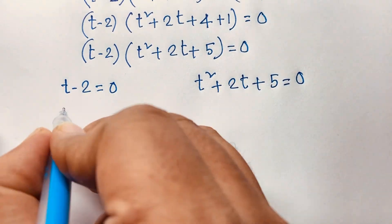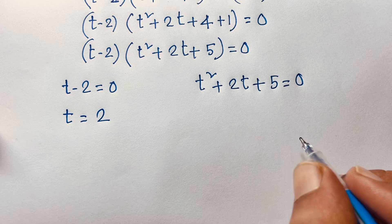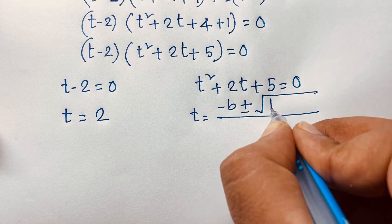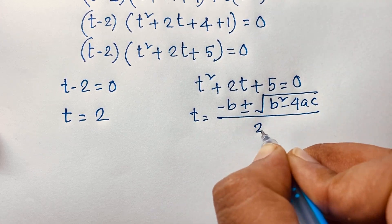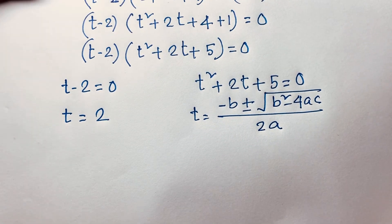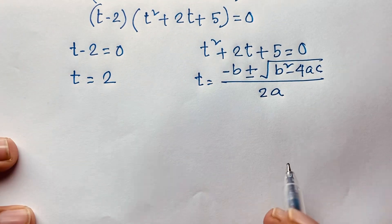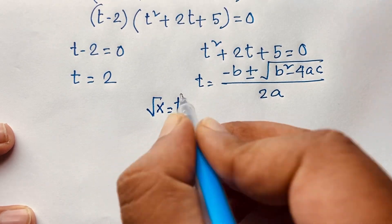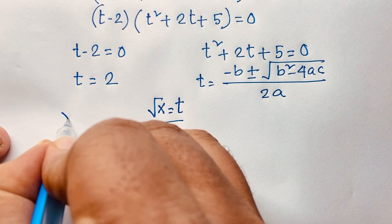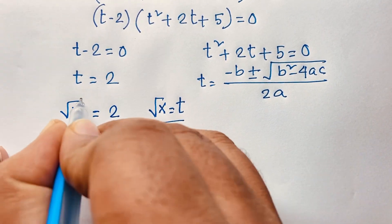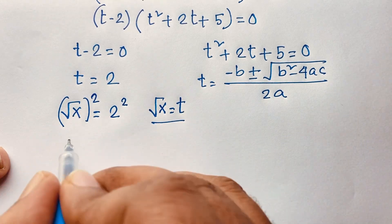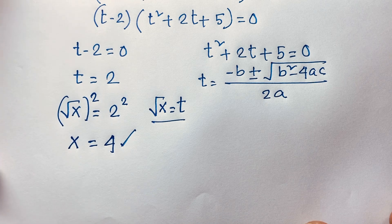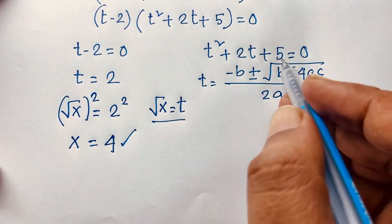From case one, t equals 2. Recall that square root x equals t. So square root x equals 2. Squaring both sides, the square cancels and we find x equals 4. This is our real solution.